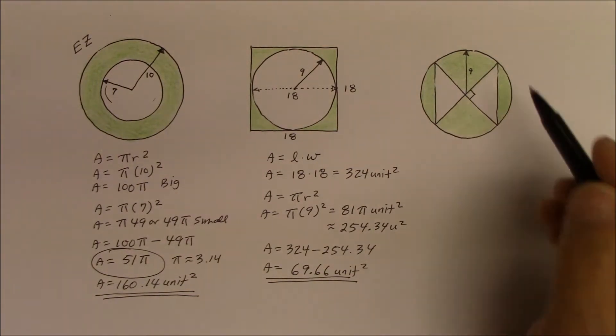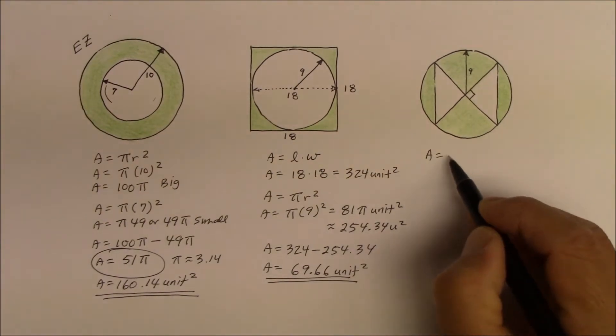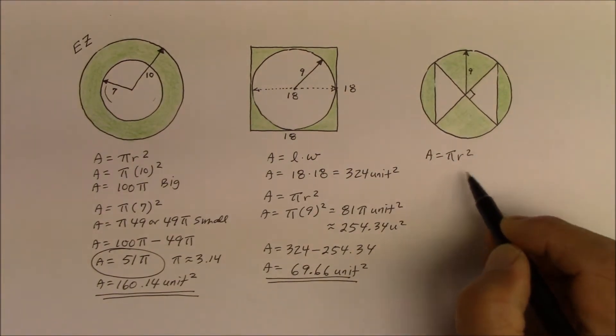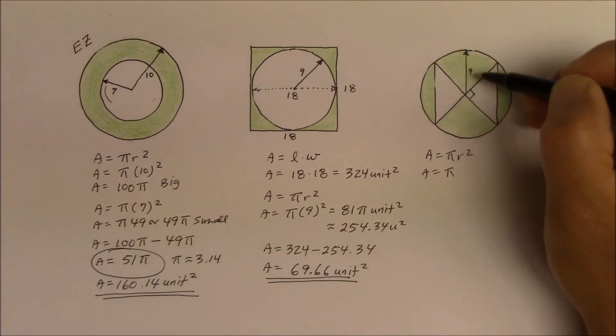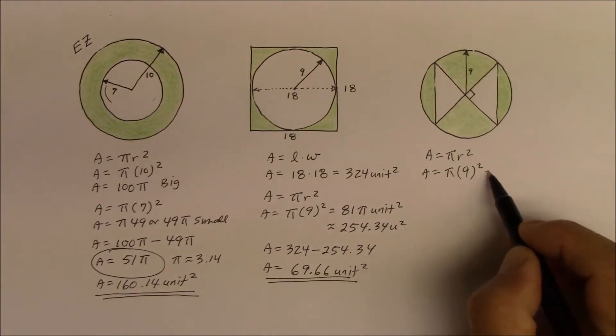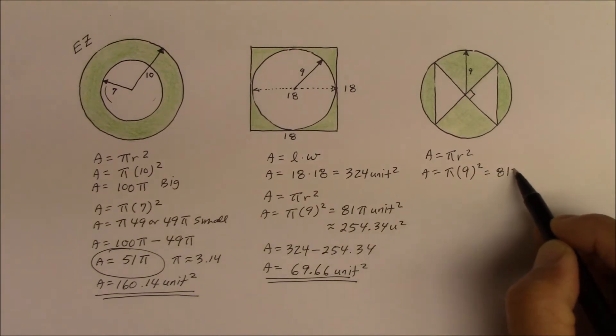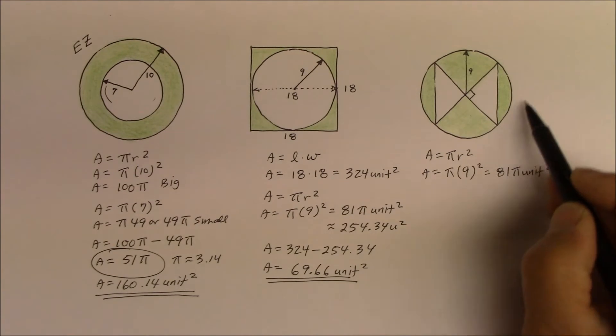But first, the area of a circle. The area of a circle, again, the formula is pi r squared. So therefore, that's going to be pi times the radius given from this center to the circumference, 9 units, which is 81 pi units squared. So that's the area of the entire circle.